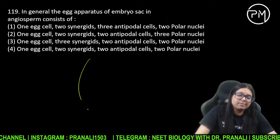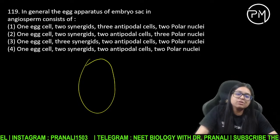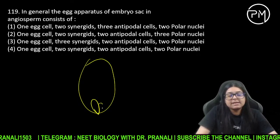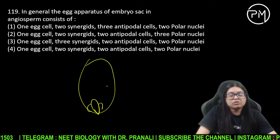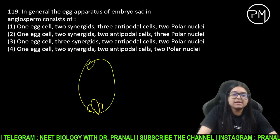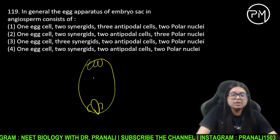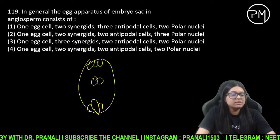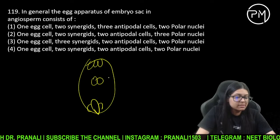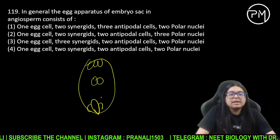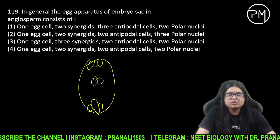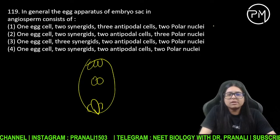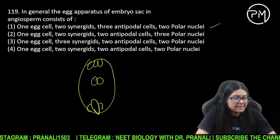Embryo sac mein kya hota hai? Embryo sac hai — yahan pe micropylar end pe ek egg hai, do synergids hain, yahan teen antipodals hain, aur yeh polar nuclei aaye hain. Toh ek egg cell, do synergids, teen antipodals, do polar nuclei. Yeh hoti hai embryo sac.